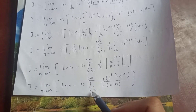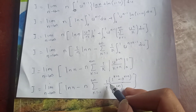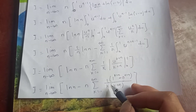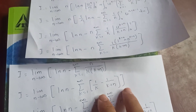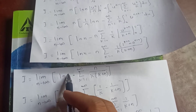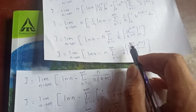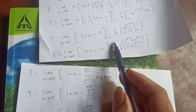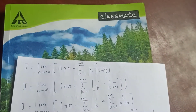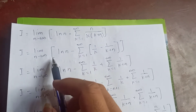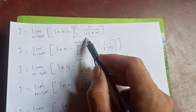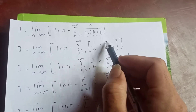Continuing: I = lim_{n→∞} [log(n) - ∑_{k=1}^∞ n/(k(k+n))]. We apply partial fractions: n/(k(k+n)) = 1/k - 1/(k+n). So I = lim_{n→∞} [log(n) - ∑_{k=1}^∞ (1/k - 1/(k+n))].